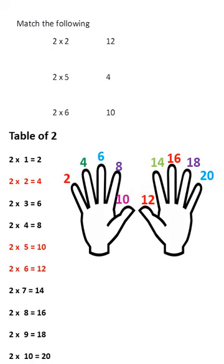Here, we have to find 2 twos are 4, 2 fives are 10. Very good. 2 sixes are 12. Excellent. Okay? You have to learn again, table of 2.